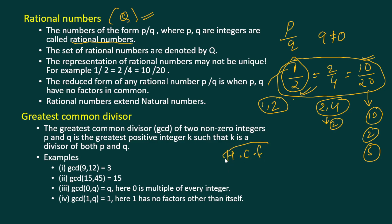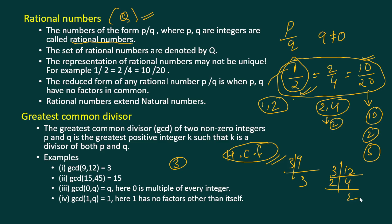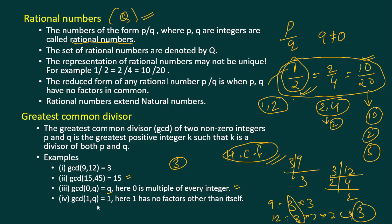Greatest Common Divisor, or GCD, is the same as HCF, which we have been finding since childhood. For example, GCD of nine and twelve is three: nine is three times three, twelve is three times four, so the common factor extracted is three. Same way, GCD of fifteen and forty-five is fifteen. GCD is nothing but HCF.